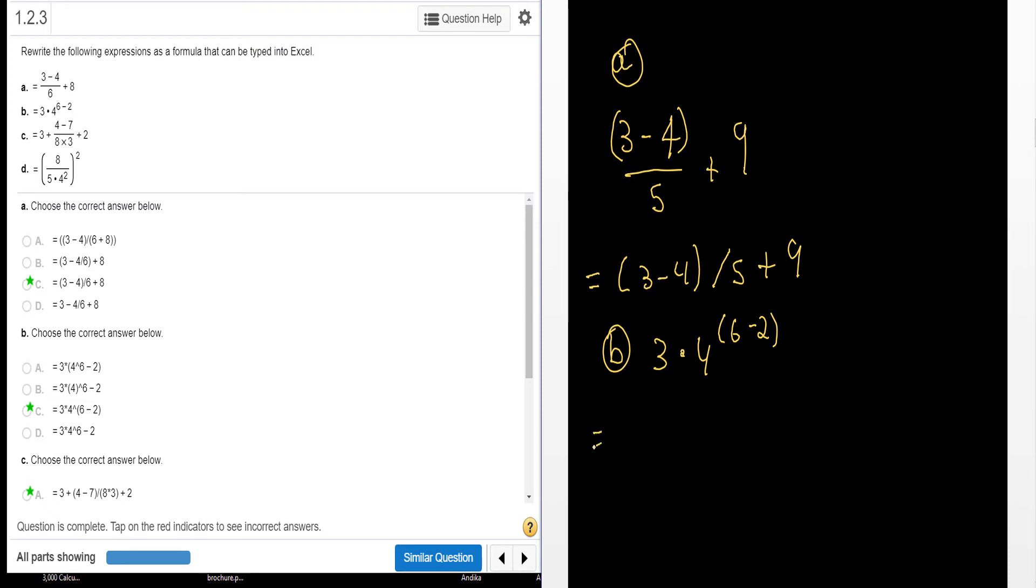So when we put this in Excel on a single line, I have 3, then I have that star that I would hit. Then I would say times 4, and the symbol for exponent is a carat. So the correct answer should look something like that, and you see that it does.